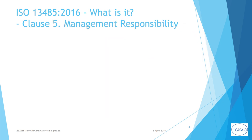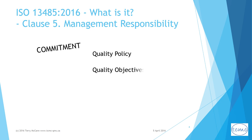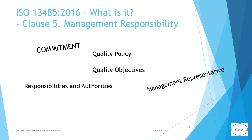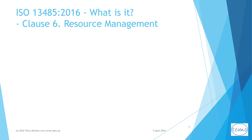The first requirement in clause 5 is for top management to show its commitment to establishing and maintaining an effective quality management system. This means establishing a quality policy and setting quality objectives for the whole organization. Top management have to define and document responsibilities and authorities for effectively operating the organization in conformity with its QMS, including appointing a management representative who shall report on the effectiveness of the QMS at management reviews conducted at planned intervals.